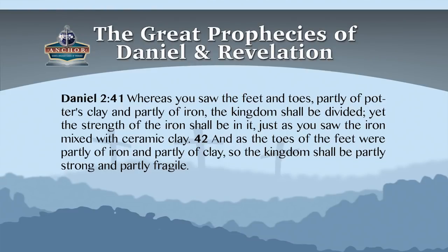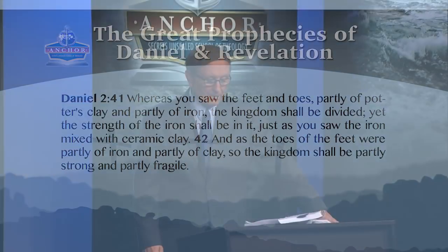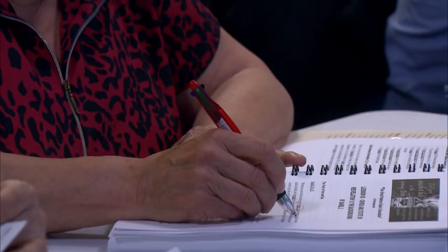We want to take a special look at the feet of the image — after Babylon, Medo-Persia, Greece, and the Roman Empire, you have the feet. Daniel chapter 2 verses 41 and 42 says: 'Whereas you saw the feet and toes partly of potter's clay and partly of iron, the kingdom shall be divided, yet the strength of the iron shall be in it, just as you saw the iron mixed with ceramic clay. And as the toes of the feet were partly of iron and partly of clay, so the kingdom shall be partly strong and partly fragile.' So in the feet you have a mixture of iron and clay.